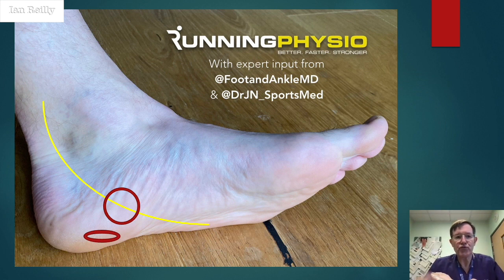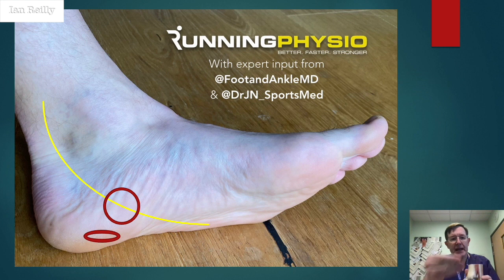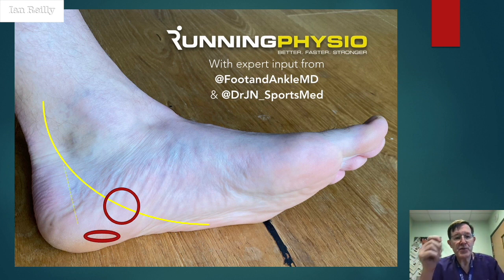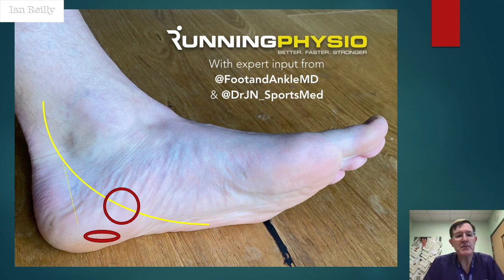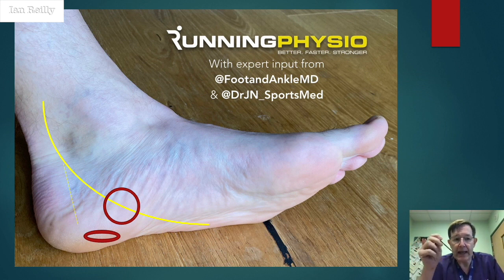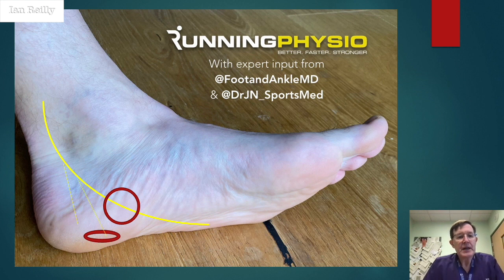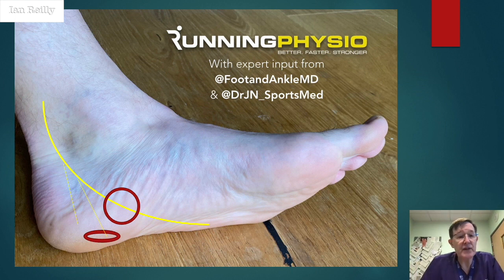It can be anywhere along that course — it can be high up or further down — but mostly further down, I would suggest. The first branch to come off the tibial nerve, which is not in this model, comes off at about this point here — that's the medial calcaneal nerve. It becomes superficial quite quickly, and rarely you'll get a neuralgic medial heel pain. If you look on my channel you'll see some videos where I've done injections for the tibial nerve split into the medial and lateral plantar nerve, and that bifurcation can be variable.